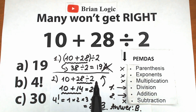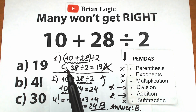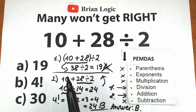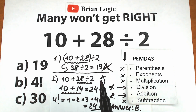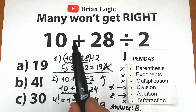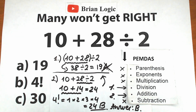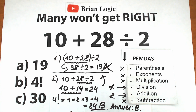You can easily check this answer with a calculator, but don't use a basic calculator — sometimes those process the problem as you type it in. For example, if you plug in 10 plus 28, the calculator gives you 38, which is absolutely the wrong first step. Try to find a calculator where you can enter the whole entire problem at once. If you plug in the whole expression, the calculator is smart enough to apply the order of operations — division first, then addition — and give you the correct answer of 24. Don't feel bad if you got this wrong, and thank you for your time and support. See you in the next video and have a great day.